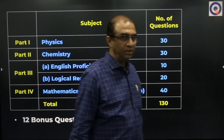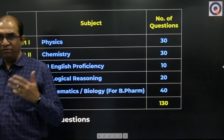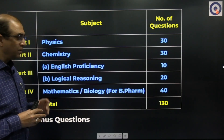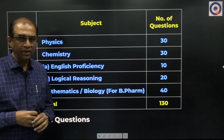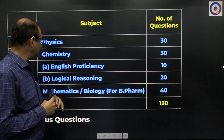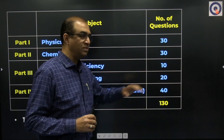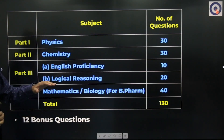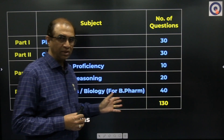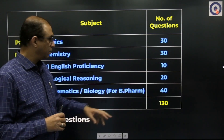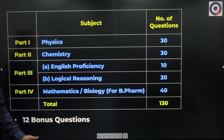Last year there was a major change in the BITSAT exam format. Previously there were 150 questions; from last year onwards it was reduced to 130. The breakdown is: Physics — 30 questions, Chemistry — 30 questions, English Proficiency — 10 questions, Logical Reasoning — 20 questions (totaling 30 in English and logical reasoning), and Mathematics or Biology — 40 questions. The marking scheme is plus 3 for correct and minus 1 for wrong answers.